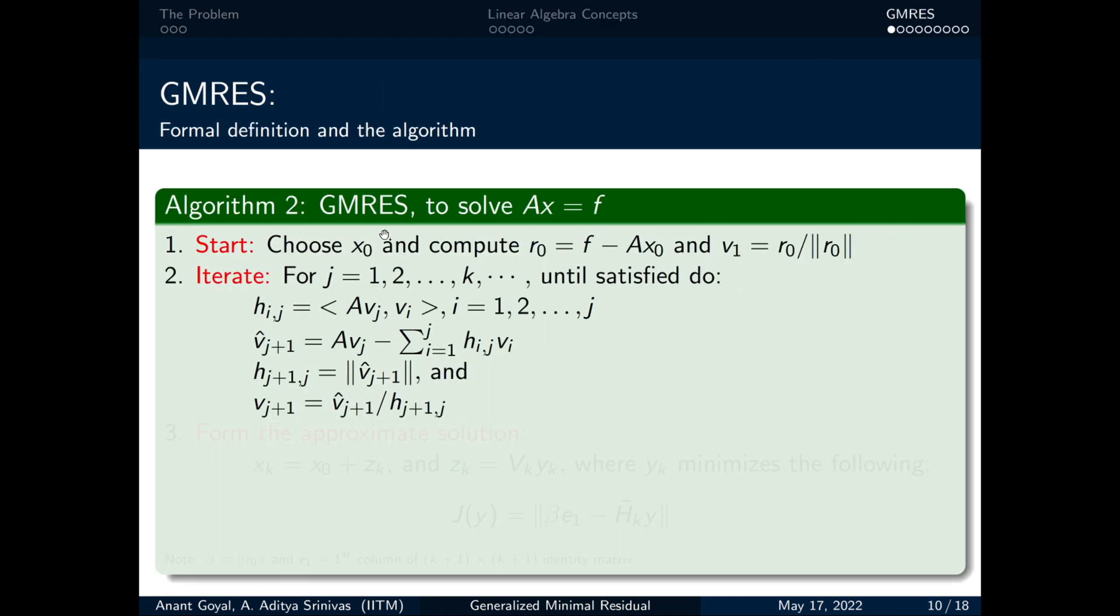The algorithm now is pretty straightforward to understand because we know Arnoldi's method for creating an orthonormal basis over the Krylov subspace. In step 1, we choose x₀ and get residual r₀. In step 2, we do nothing more than Arnoldi's algorithm thus generating the matrix vₖ and hₖ respectively.